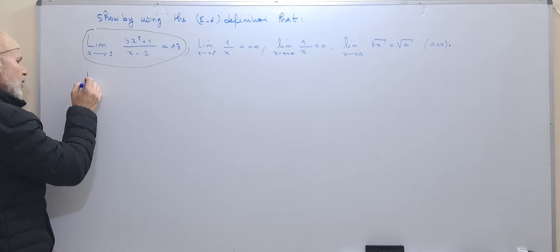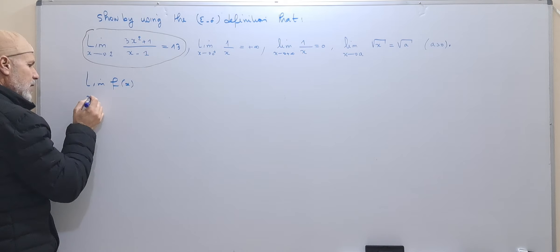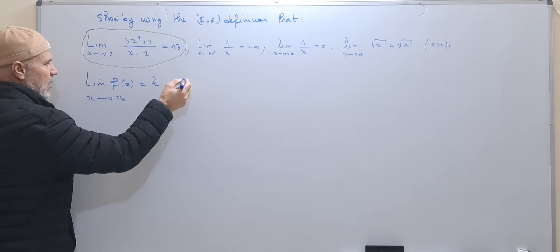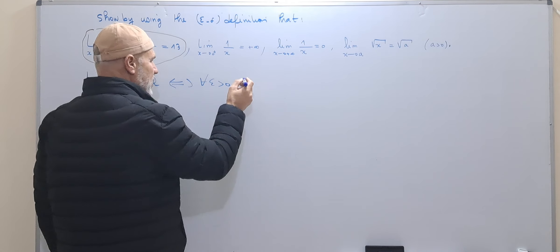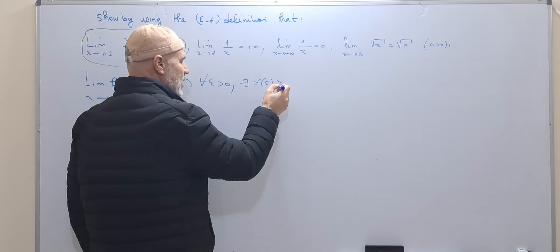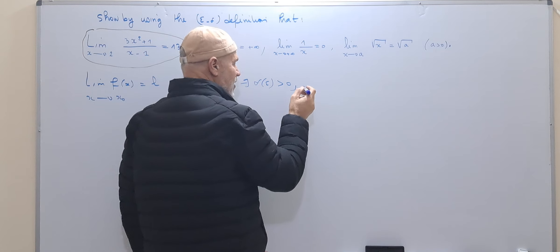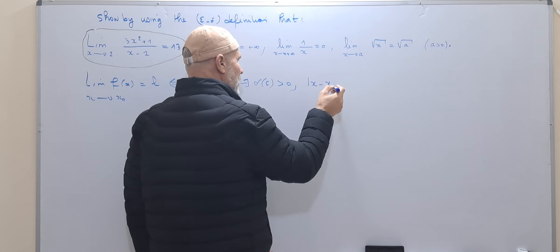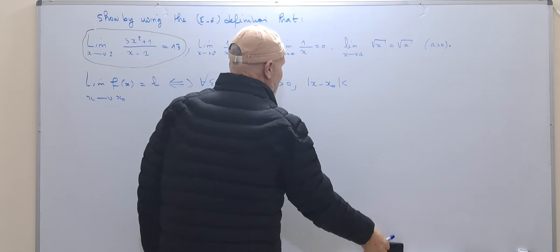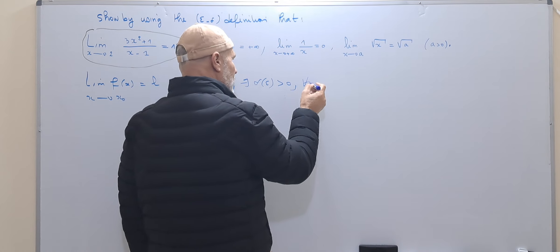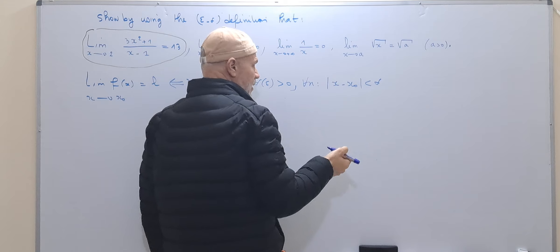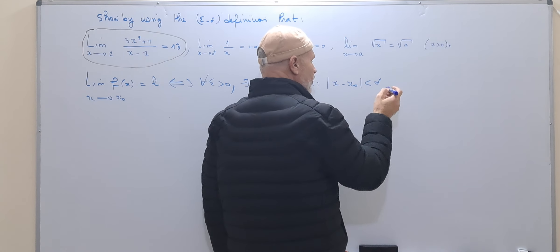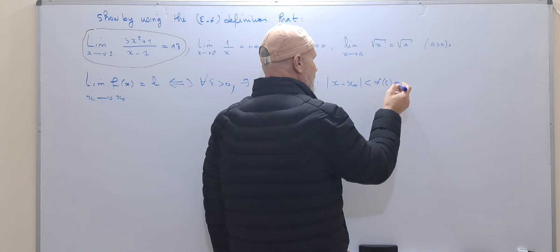The definition: we say the limit of f(x) as x goes to x₀ is equal to L. This is equivalent to showing that for all epsilon greater than 0, we can find a delta which depends on epsilon, greater than 0, such that for all x in the domain of definition satisfying |x − x₀| < delta, we have |f(x) − L| < epsilon.